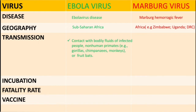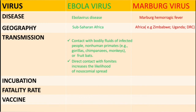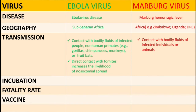When it comes to transmission, the Ebola virus is transmitted through contact with bodily fluids of infected people or sometimes non-human primates like gorillas and mangabeys, or fruit bats. Direct contact with fomites also increases the likelihood of nosocomial spread. The Marburg virus is transmitted through contact with bodily fluids of infected individuals or animals.